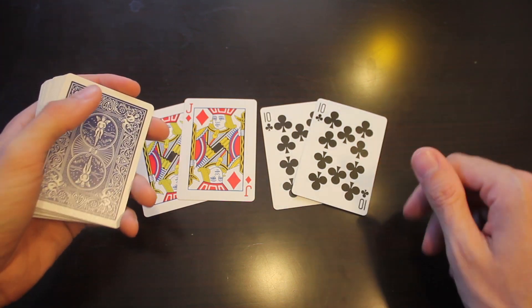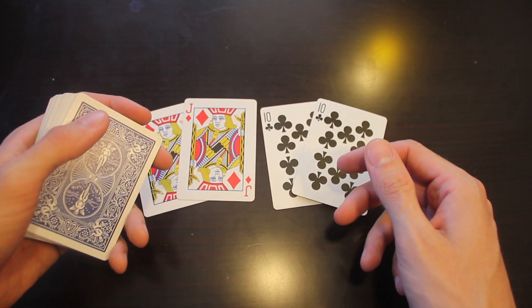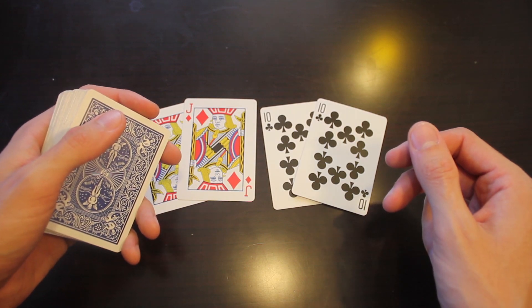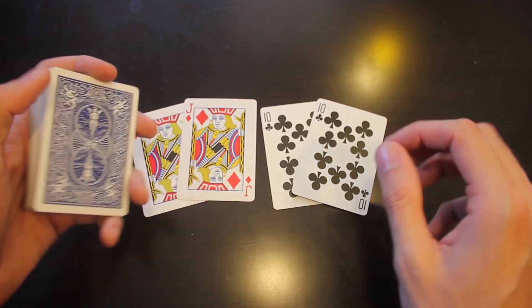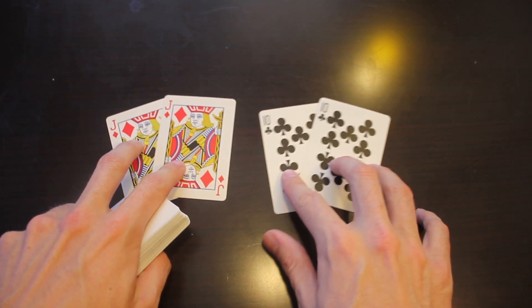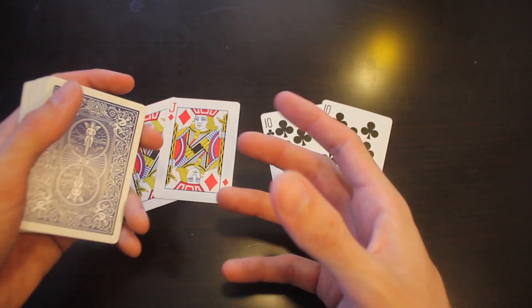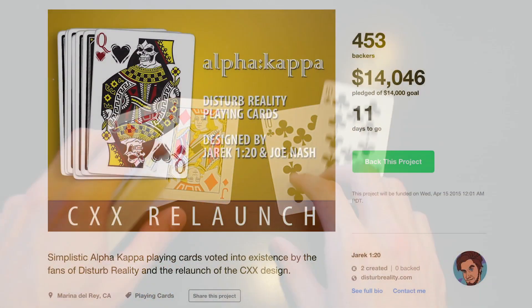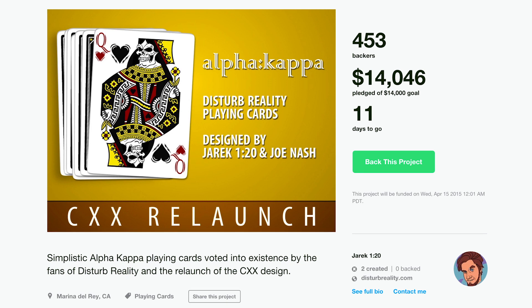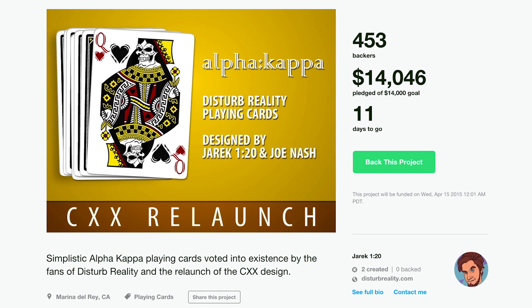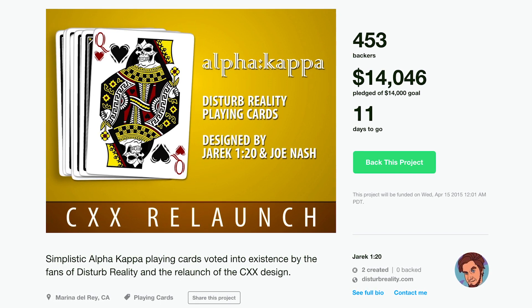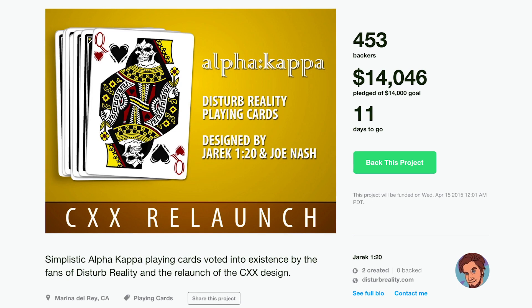But I'm happy to announce that my Kickstarter project, the Disturb Reality Playing Cards, the CXX deck, and the Alpha Kappa deck, which feature two duplicate cards on top of the 52 standard cards on top of the two jokers, has been fully funded on Kickstarter. It's reached its goal of $14,000, so the decks are going to be made, which is awesome.